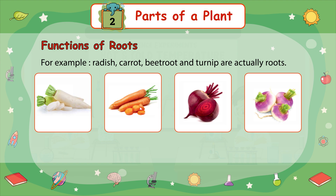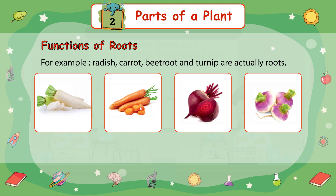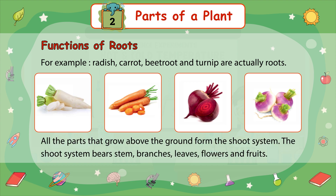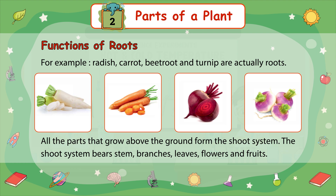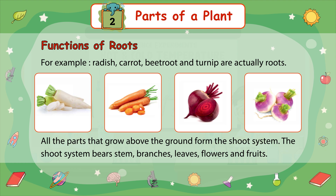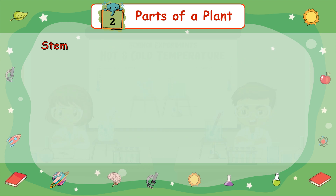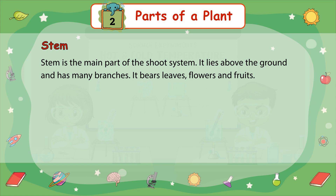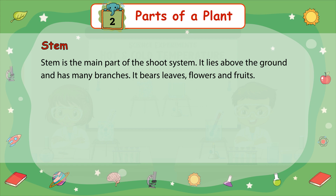Radish, carrot, beetroot, and turnip store food in their roots. Shoot system: all the parts that grow above the ground form the shoot system. The shoot system bears stem, branches, leaves, flowers, and fruits. Stem is the main part of the shoot system. It lies above the ground and has many branches. It bears leaves, flowers, and fruits.